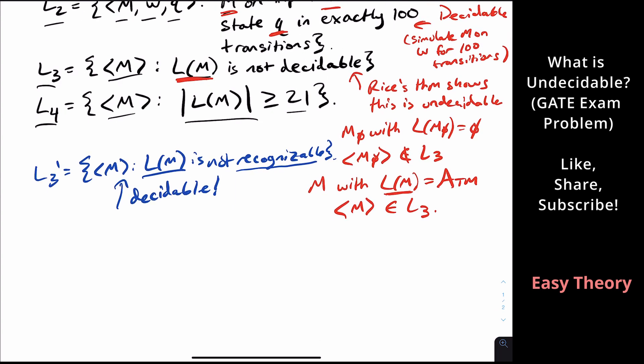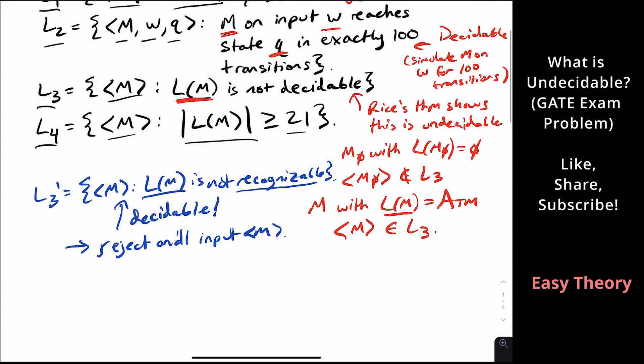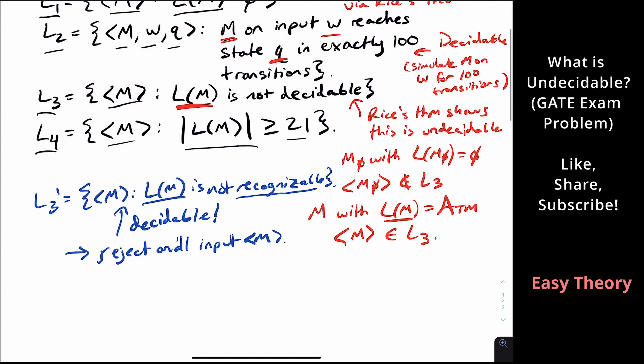So what would a decider do? Just reject on all inputs. So on all possible Turing machines you get, you just reject because every Turing machine's language is recognizable. So it's actually really important to distinguish between decidable and recognizable here. So L3 really is undecidable because we can produce a machine with an undecidable language.